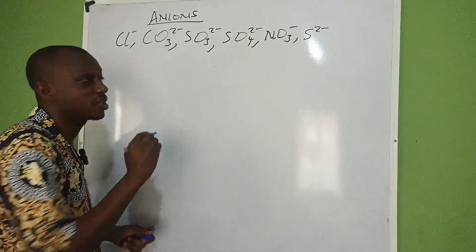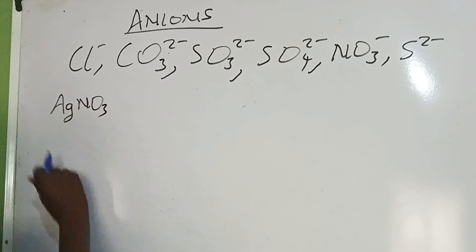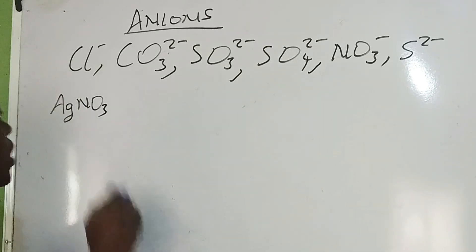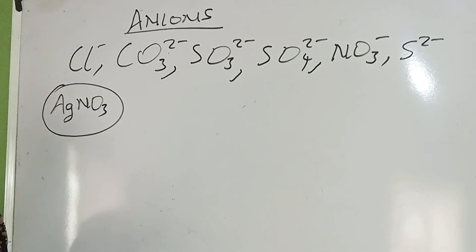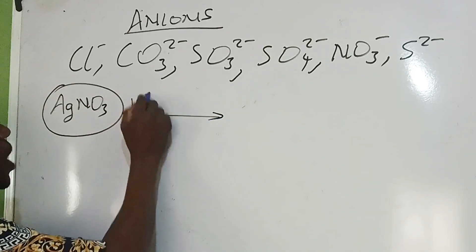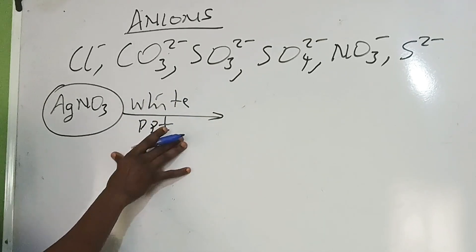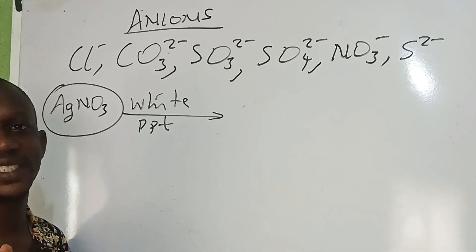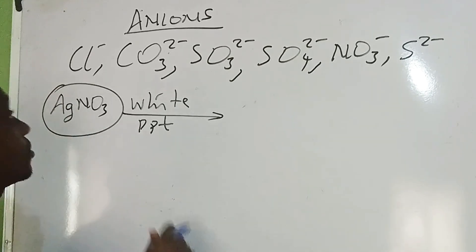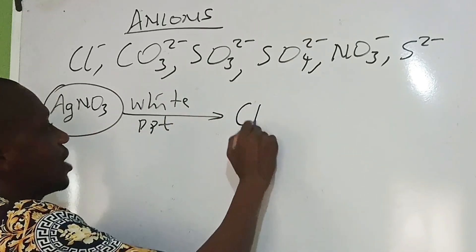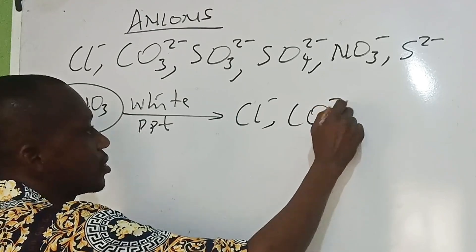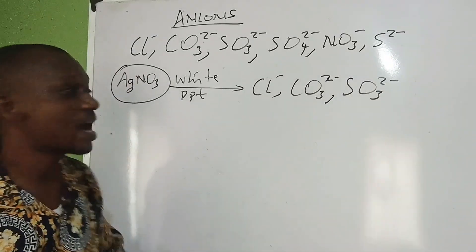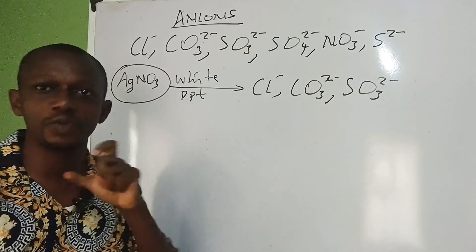The first precipitating reagent that we mention here is AgNO₃ (silver trioxonitrate V). If you are applying this into a solution, what are you expecting to get? For sure, you are going to see white precipitate. When you get white precipitate, there are three anions: Cl⁻, CO₃²⁻, and SO₃²⁻ that will give you white precipitate when you introduce silver trioxonitrate V into that particular solution.